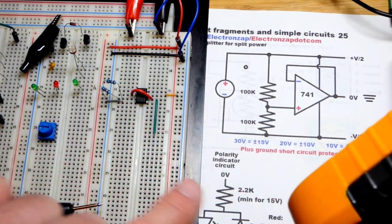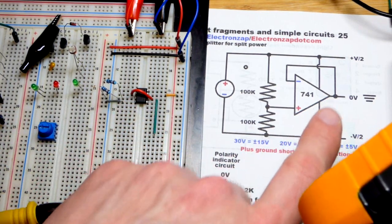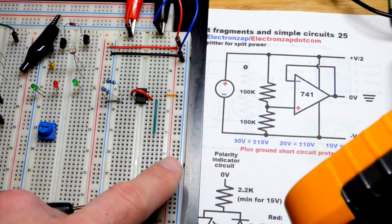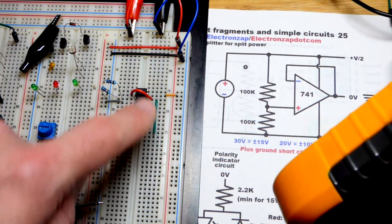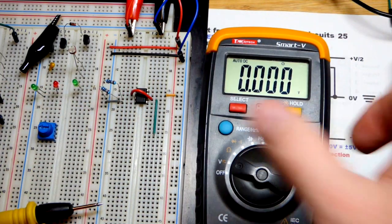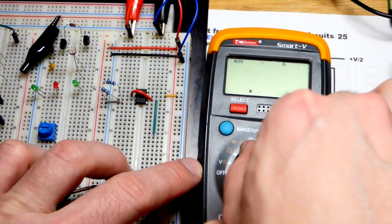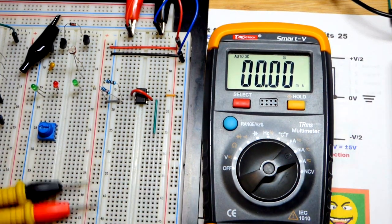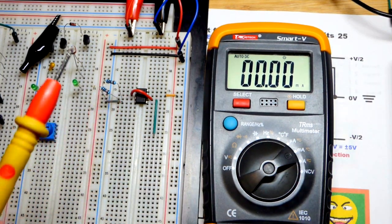Now there's another thing. The output of the op amp, which is ground now, has short circuit protection. We can go from the positive rail or the negative rail and it's going to take current both ways. But the amount of current is limited by the op amp.